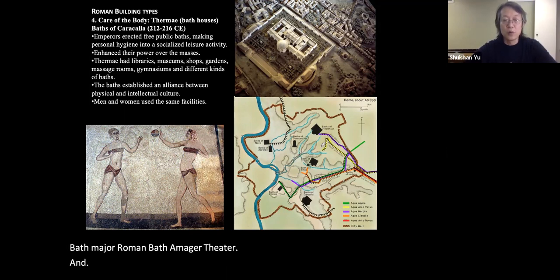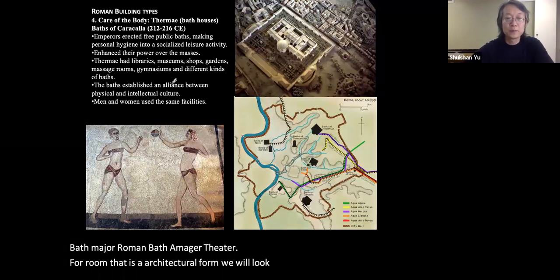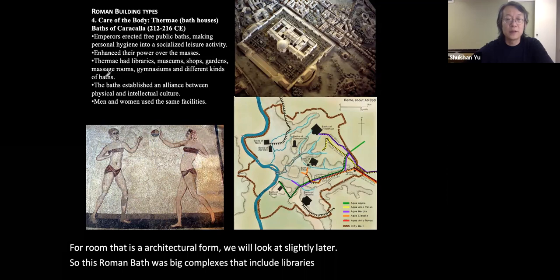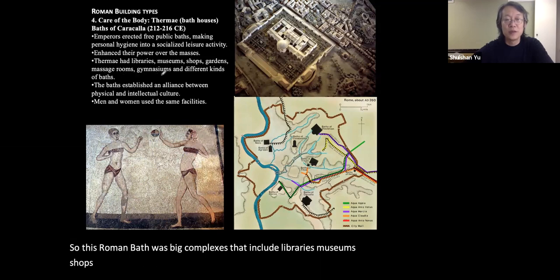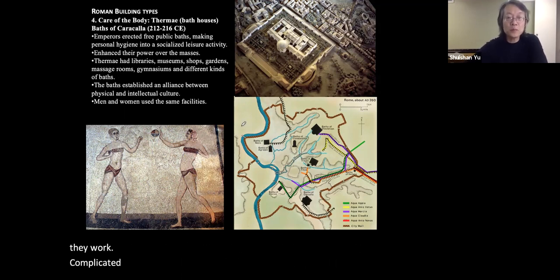Building thermae was a way to win the hearts of Roman citizens. It enhanced the Roman emperor's power over the masses, and as long as Romans had a comfortable life, they supported their emperor. The wealth from constant conquest went into the construction of major monuments in the city of Rome. Each emperor left a major bath, a major theater, and a forum. These Roman baths were big complexes that included libraries, museums, shops, gardens, massage rooms, gymnasiums, and different kinds of baths.